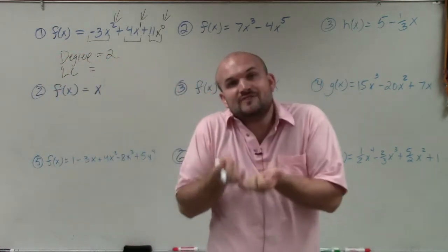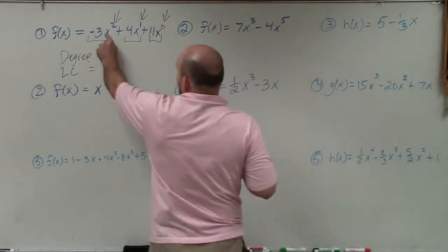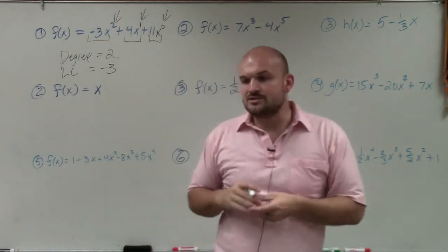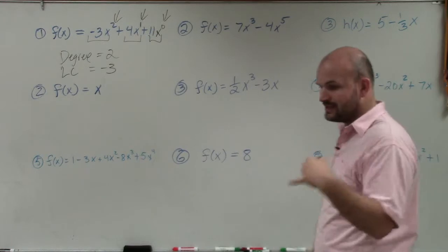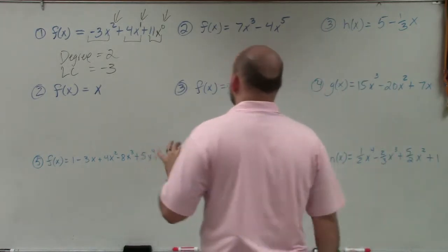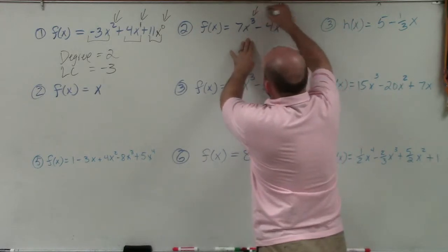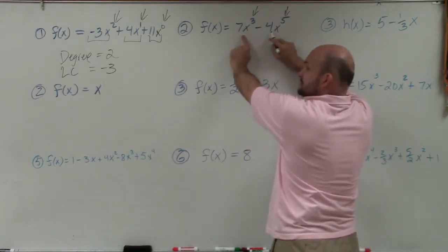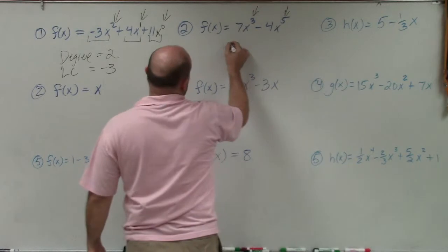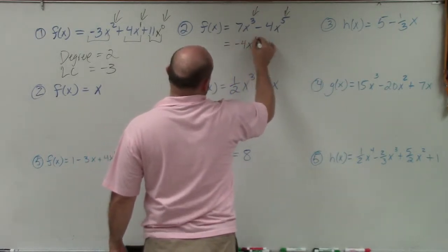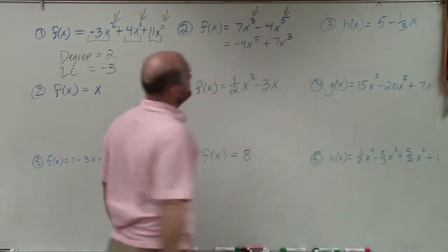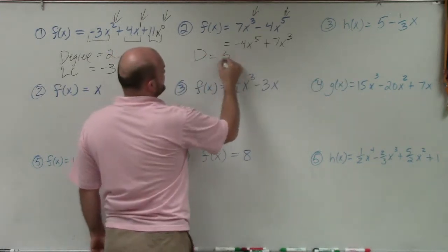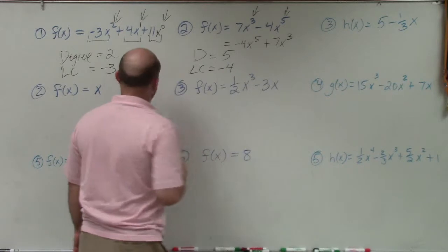The leading coefficient is the coefficient of your leading term. You can see my leading term is x squared, where the power is 2. The coefficient of that is negative 3. So now, let's make sure that before we get anything done, we rewrite everything in descending power form. Here we have a power of 3 and a power of 5. The 5 should be in front of the 3 — the coefficient doesn't matter, only the powers. So to rewrite this in descending order form: negative 4x to the fifth plus 7x cubed. Now I can determine my degree is 5, and my leading coefficient is negative 4.